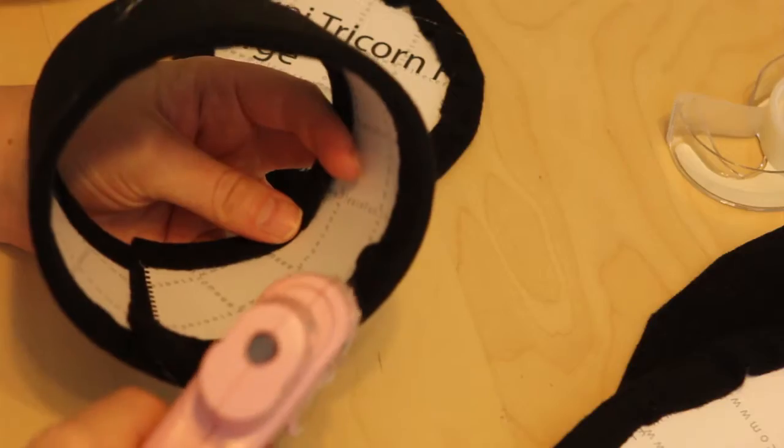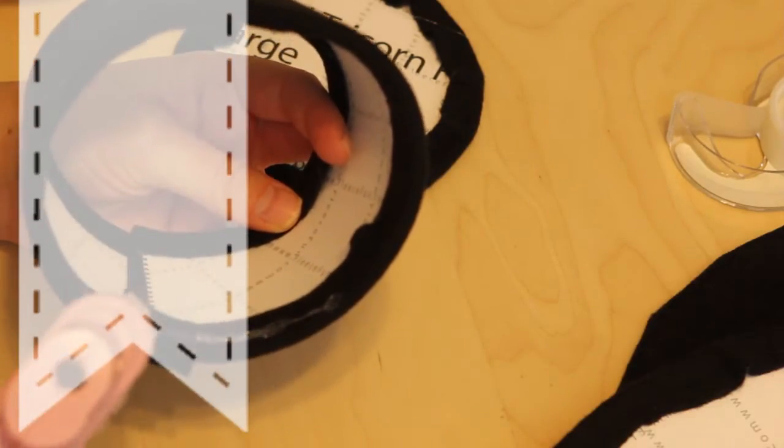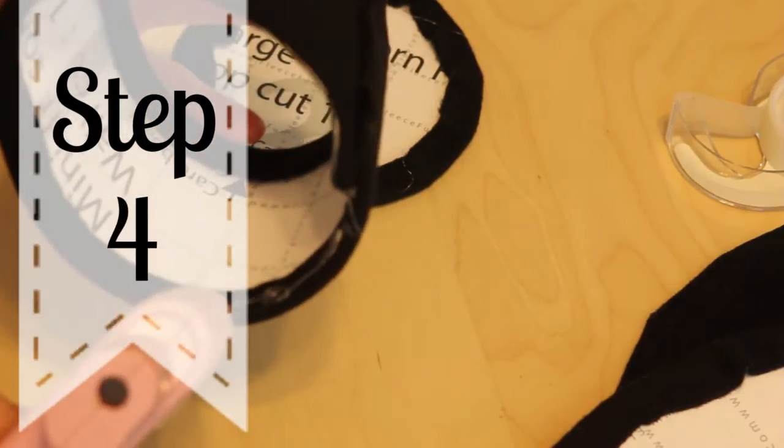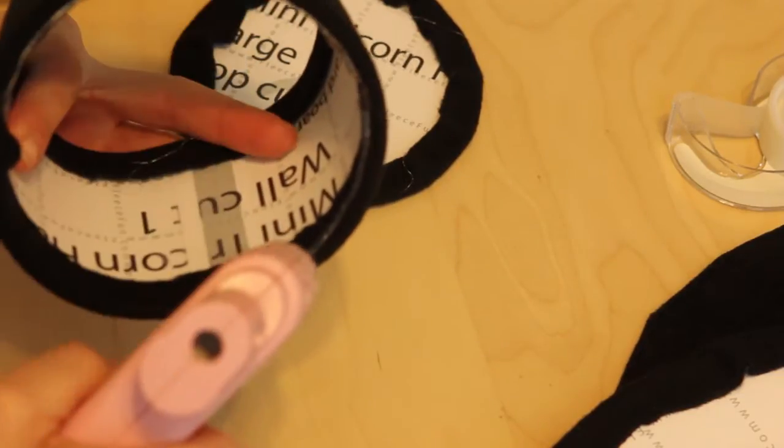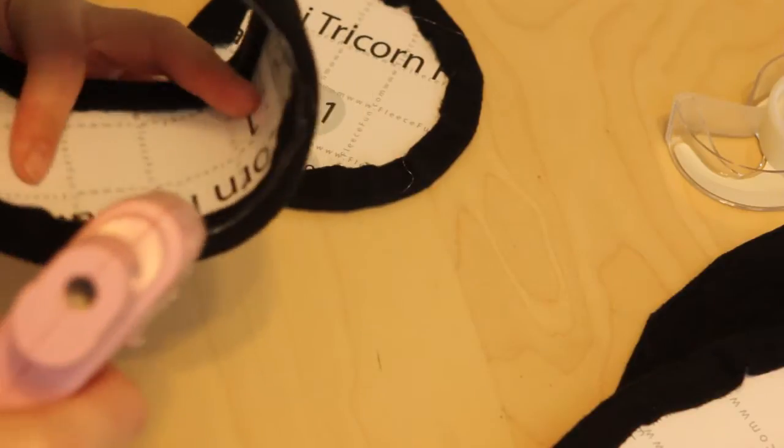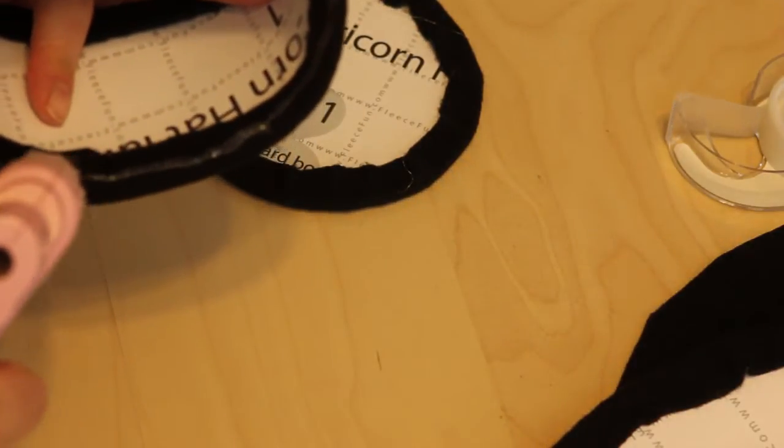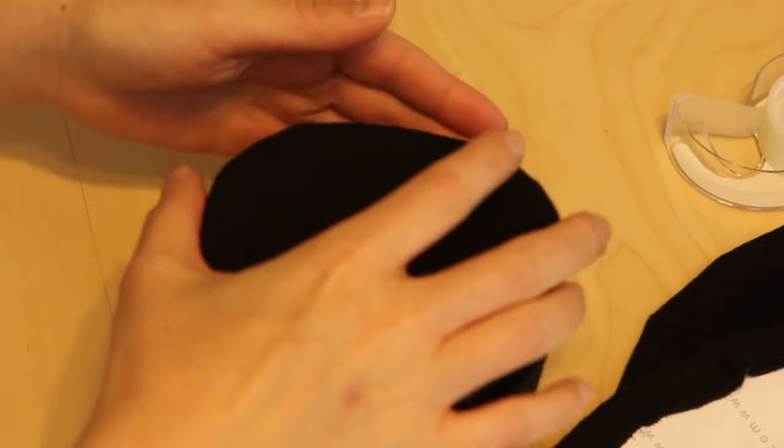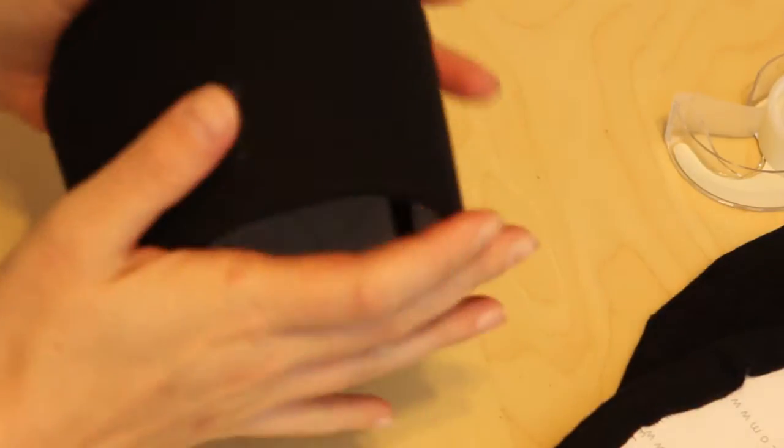Once you've built the wall, it's time to add the top. Once the wall is secure, it's time to add the top of the hat. Using your glue gun, glue all the way around the top part of the wall, just barely on the inside. Place the top on and hold it into place securely for a few seconds.